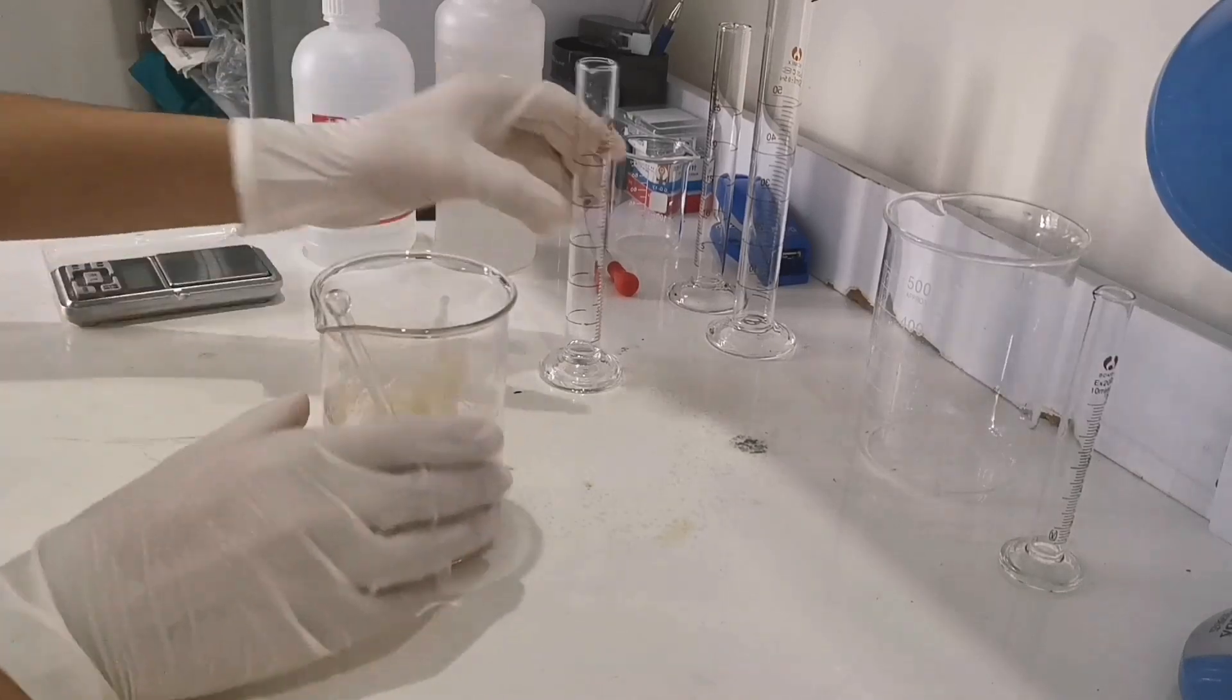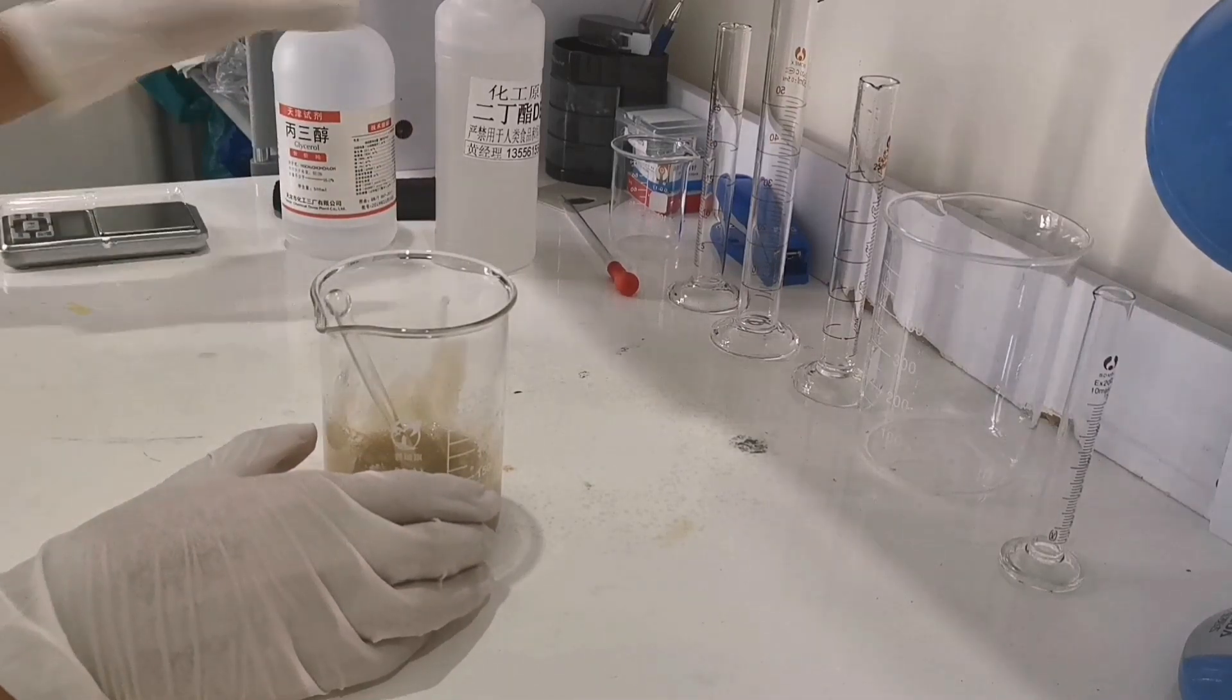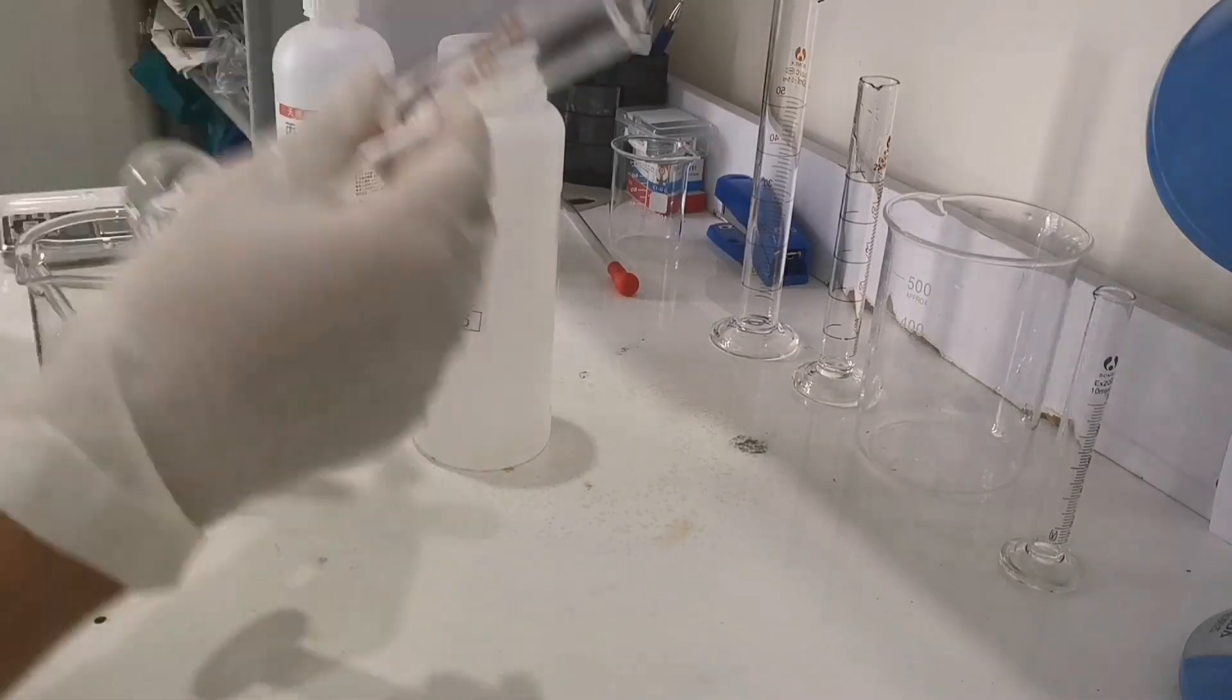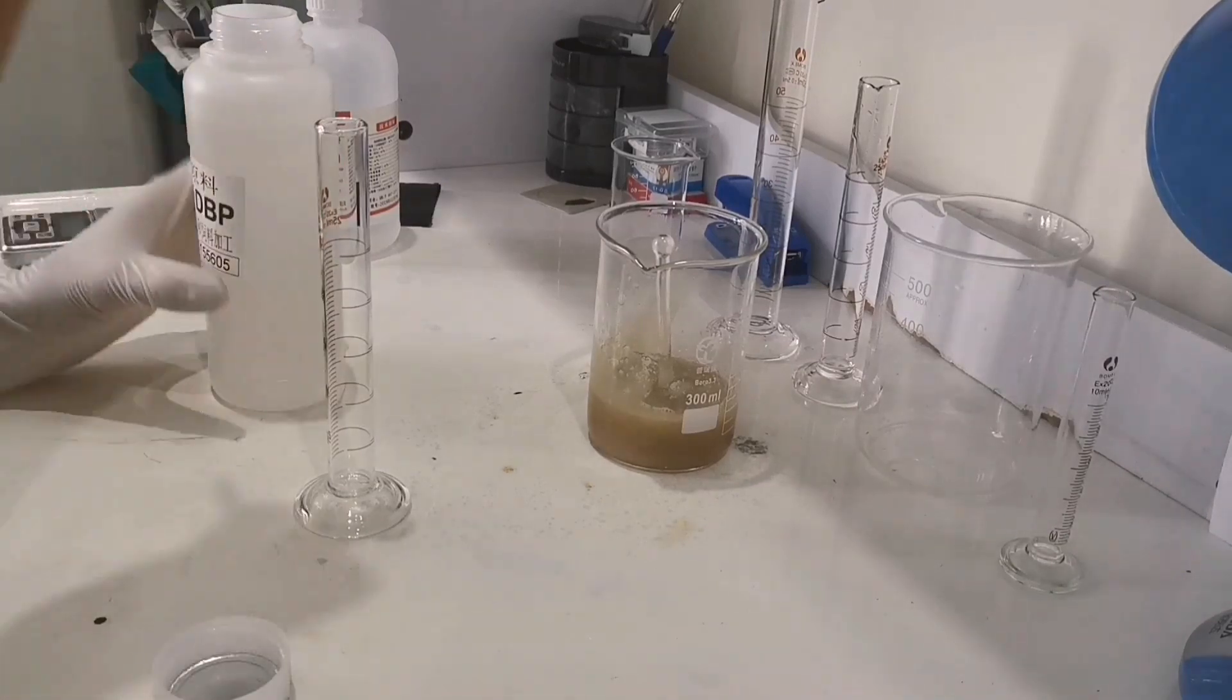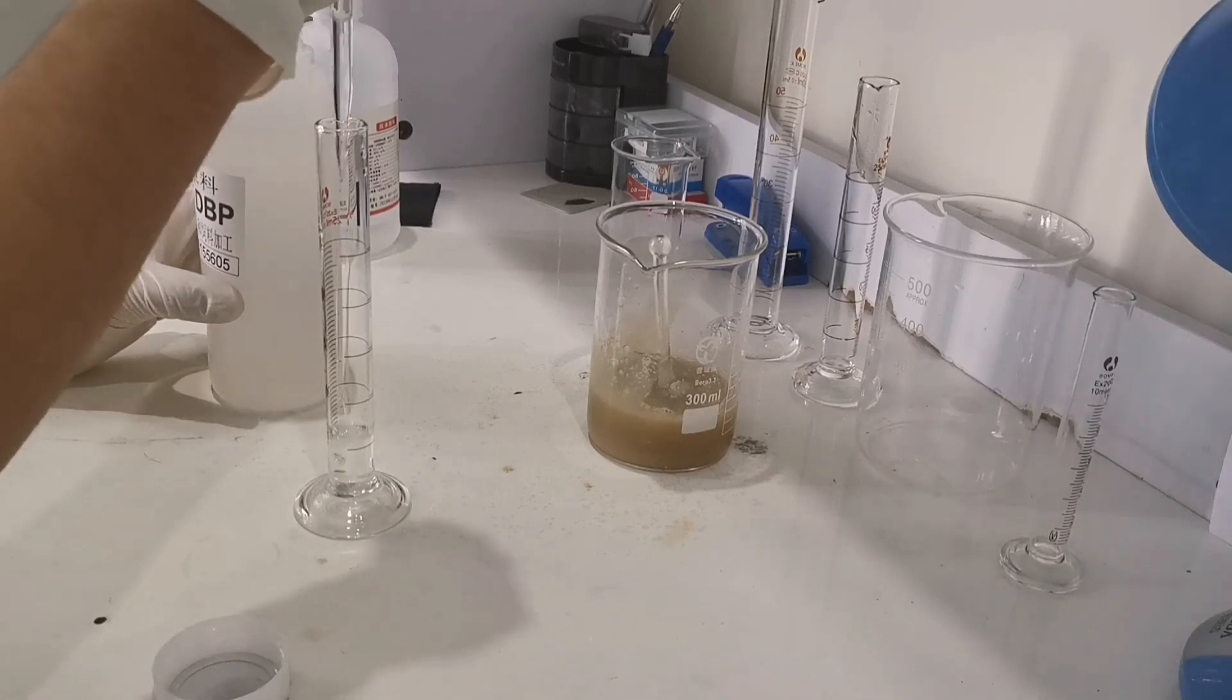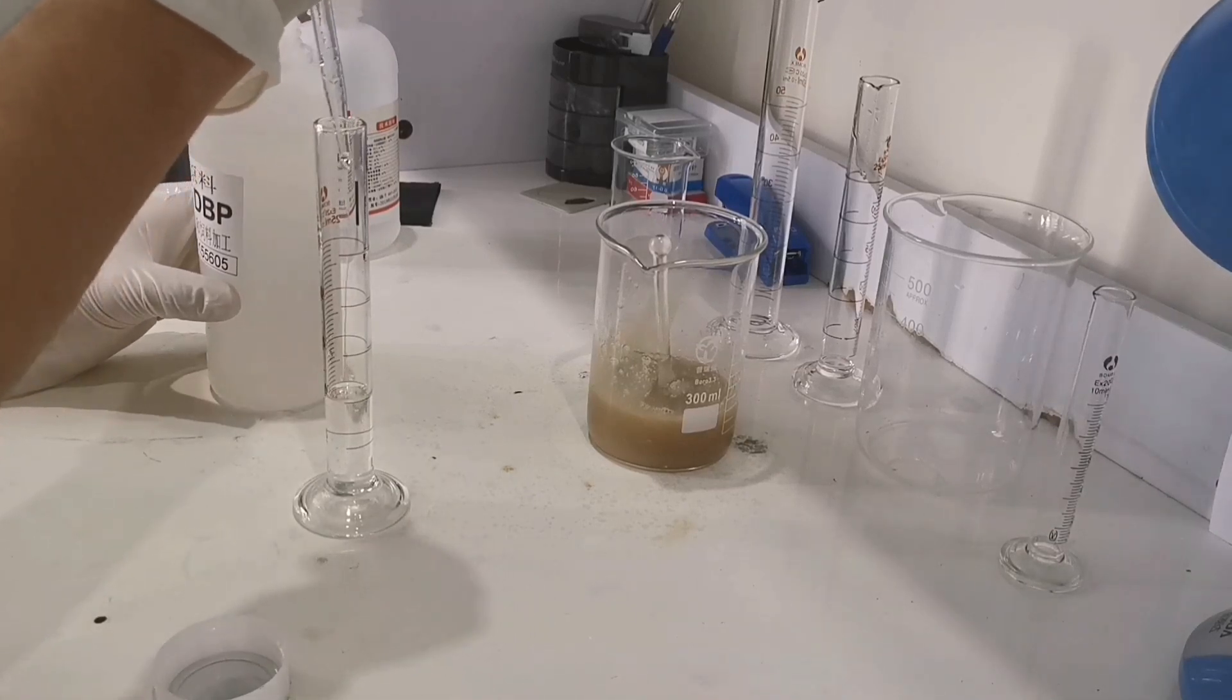When I saw the solution got hard again, I think it's time to add the DBP into the beaker. I took out another measuring cylinder and I measured out about 10 ml of DBP. If you were using 29 grams of glycerin instead of 10 ml of DBP, you can actually skip this step.